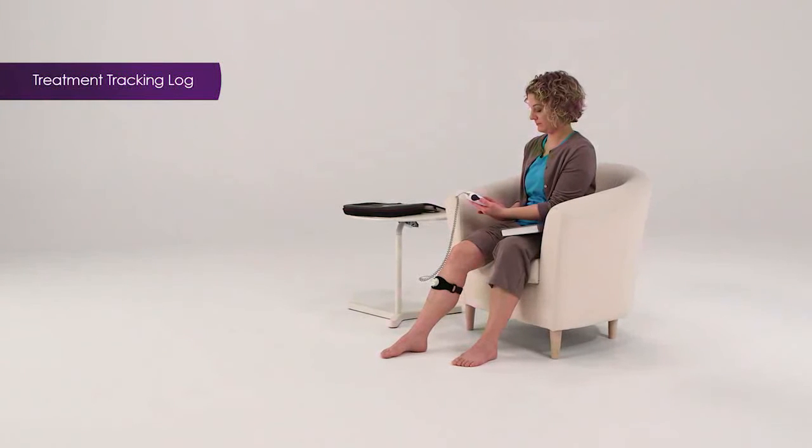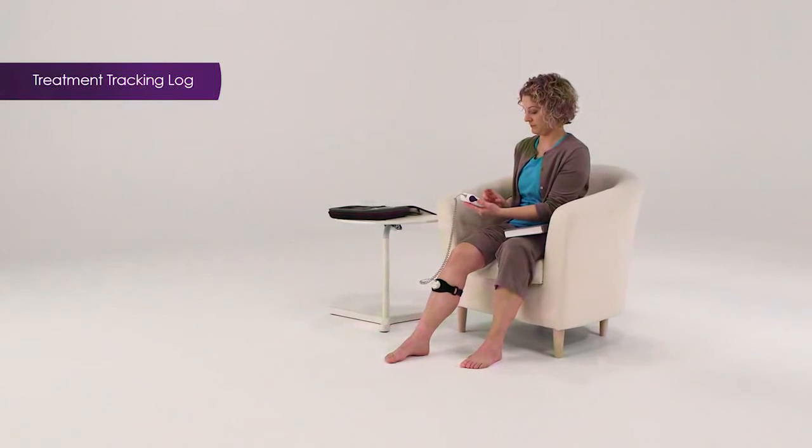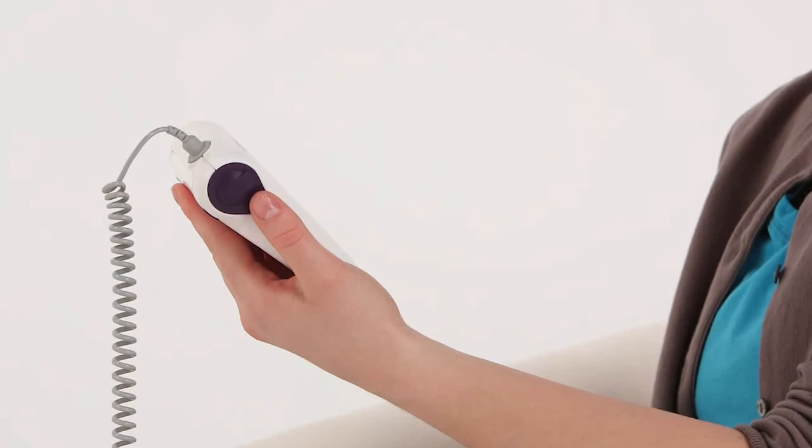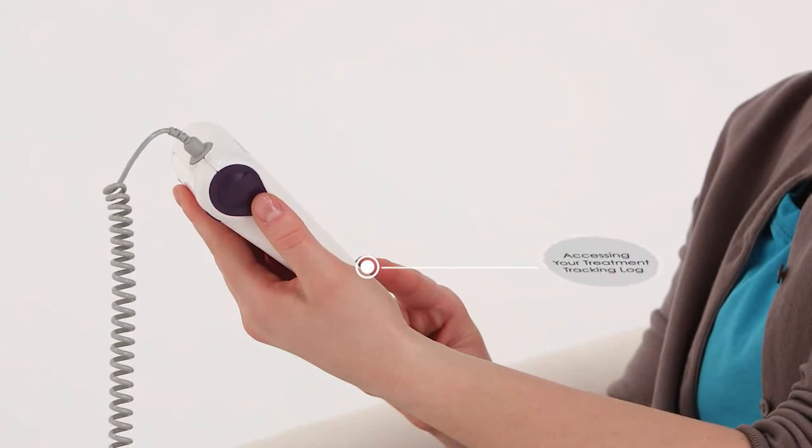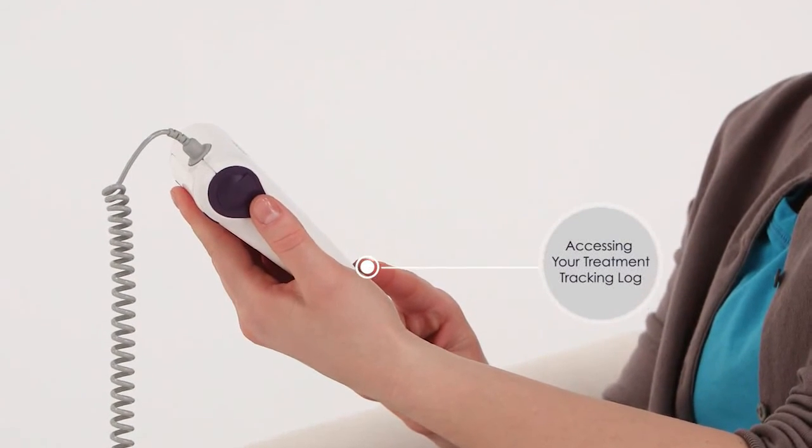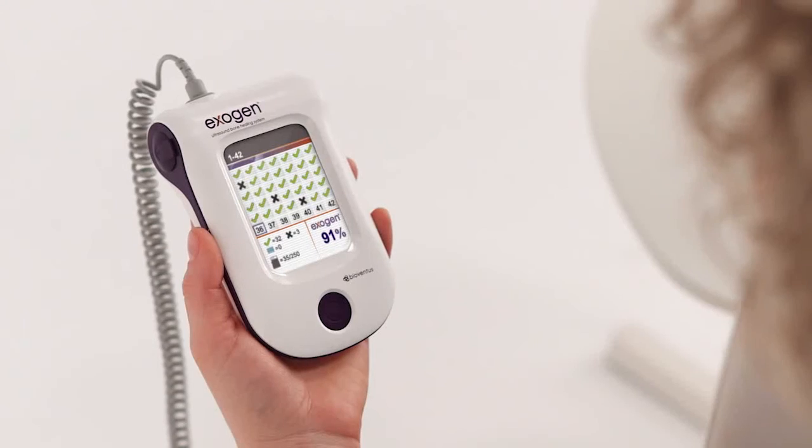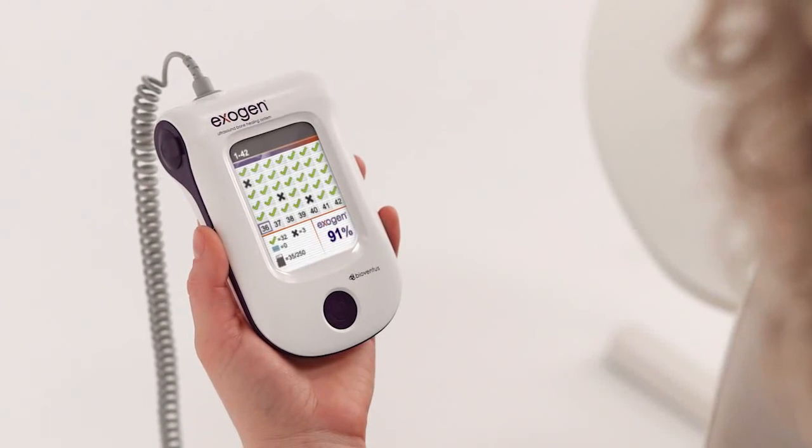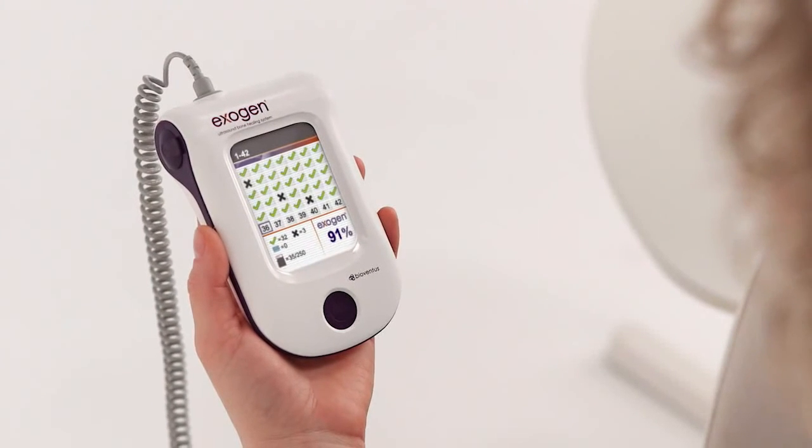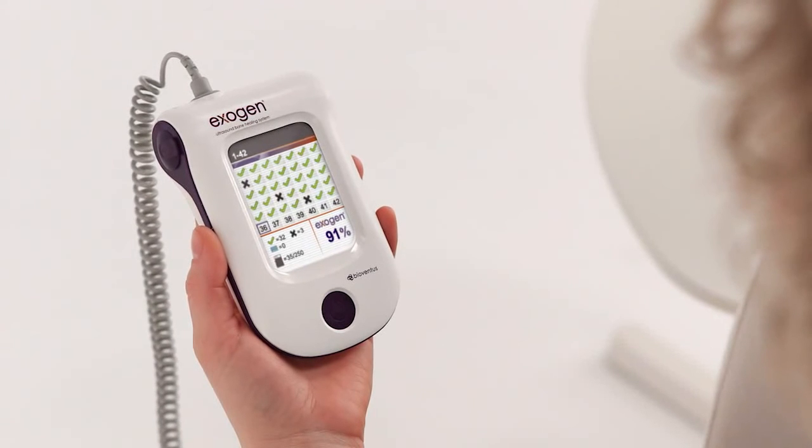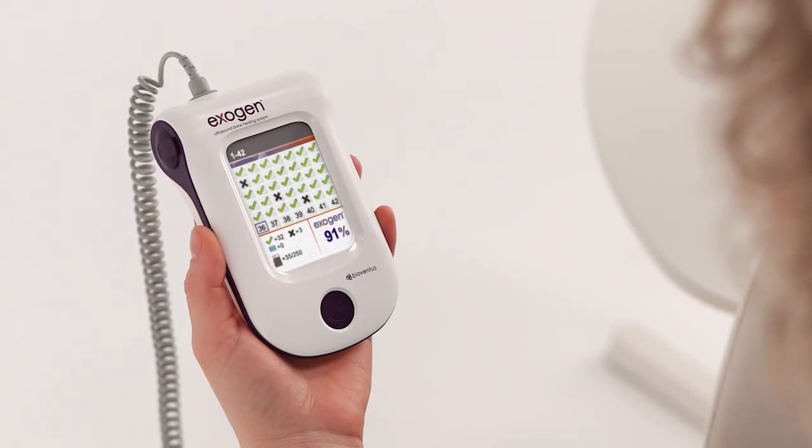Exogen features a built-in treatment tracking log to help you use your device as prescribed. To access the treatment tracking log, press and hold the button for approximately three seconds. The treatment log tracks device usage to date. A check mark indicates one completed treatment and an X indicates a day with no treatments. The treatment log also provides a summary of usage to date.